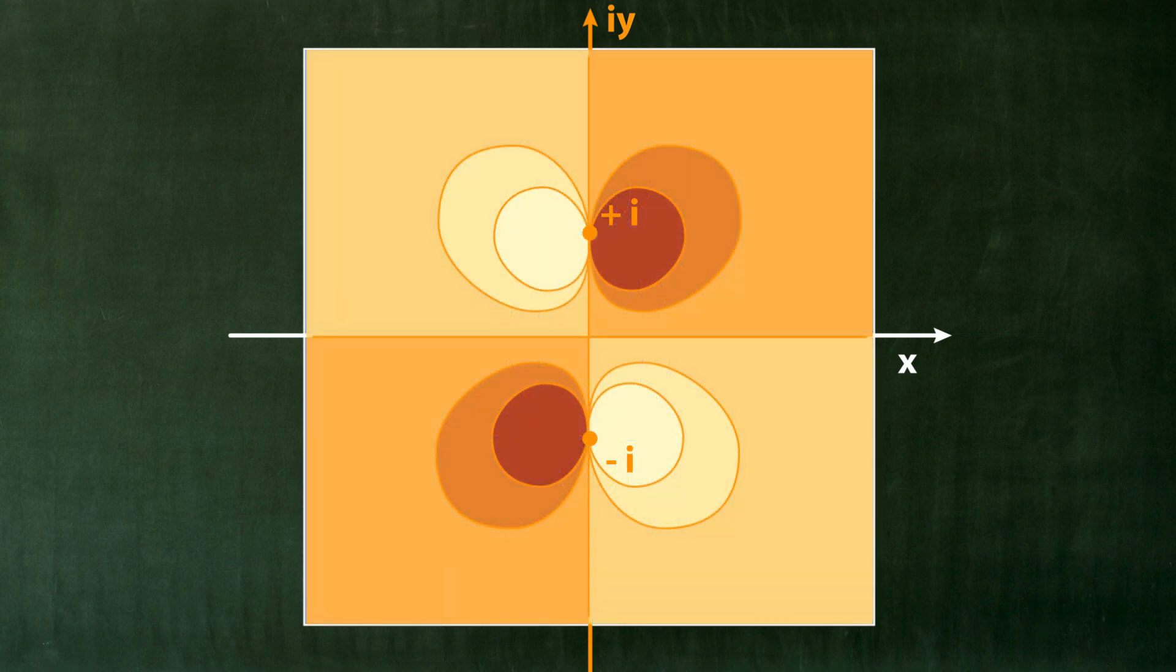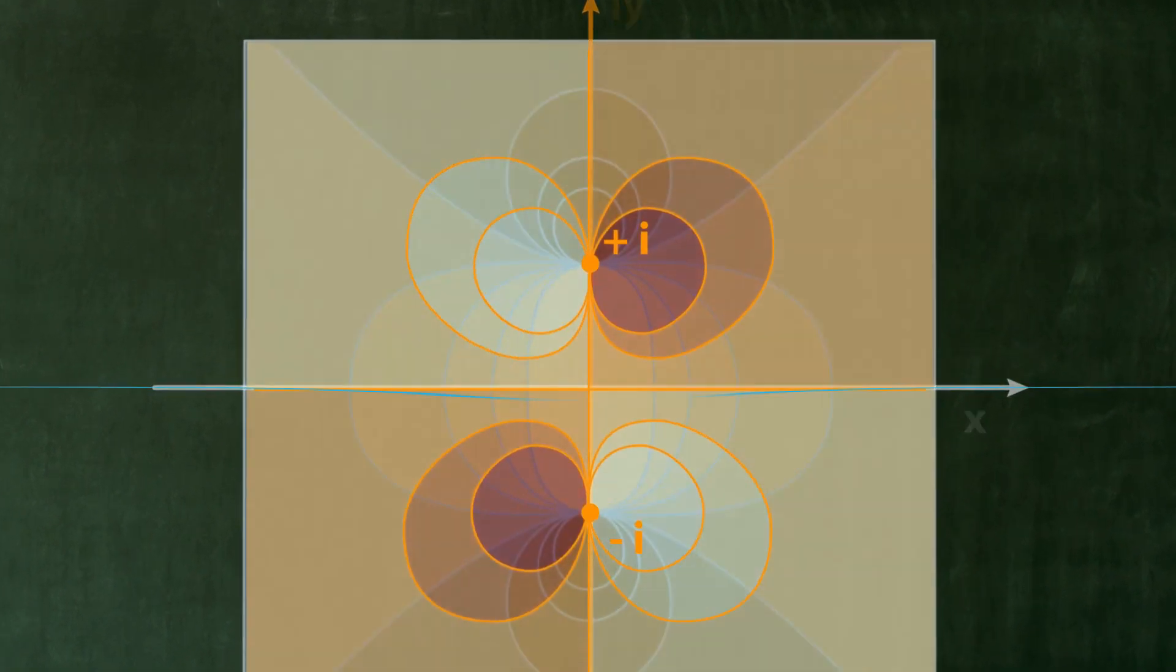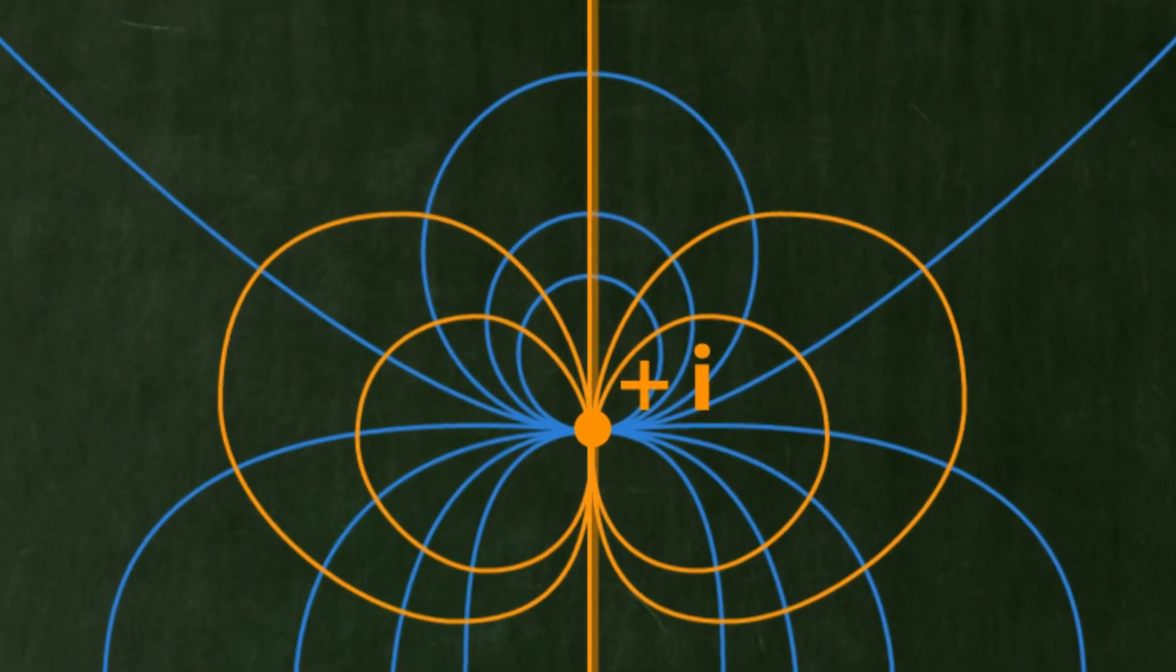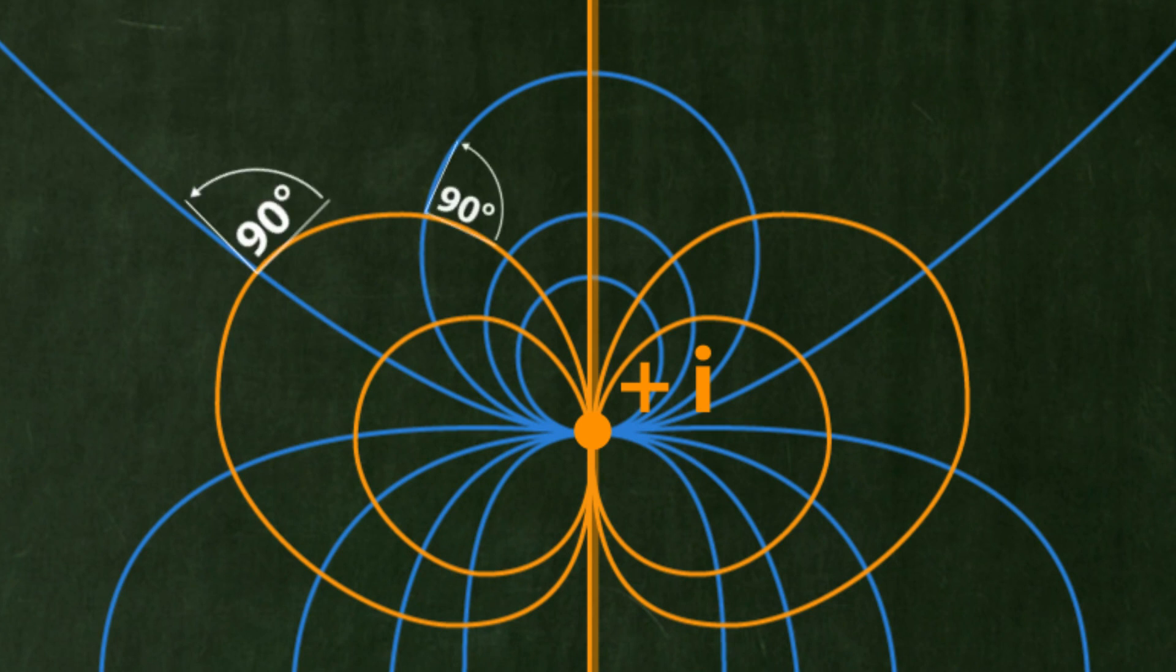And this take shows the altitude lines of the mountain landscape for the imaginary part. It can be seen that the altitude lines of the real and imaginary parts always intersect at right angles.